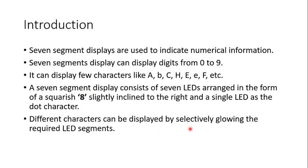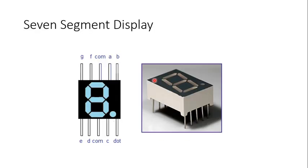Different characters can be displayed by selectively glowing the required LED segments. This is how it actually looks, as shown in the diagram. These are the different terminals of the 7-segment display. The display looks like the number 8. Each individual segment is arranged in the fashion of an 8.